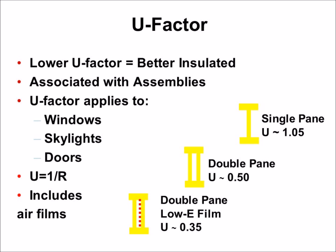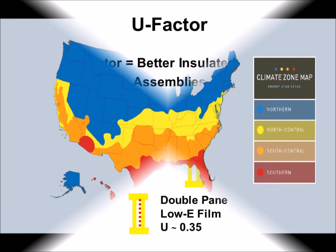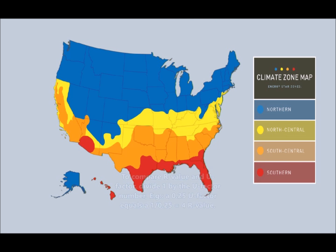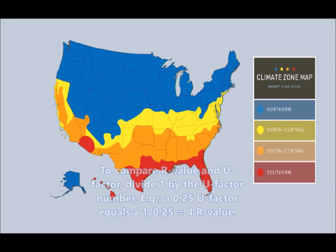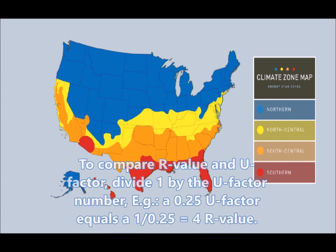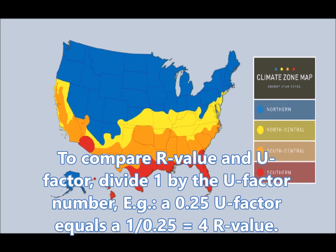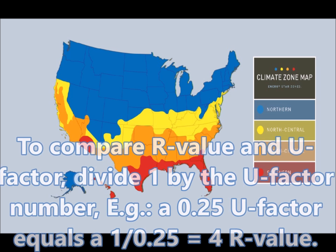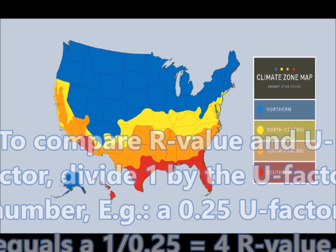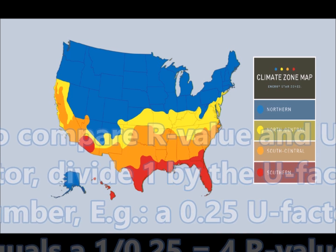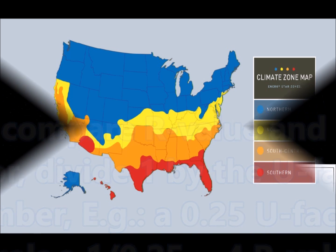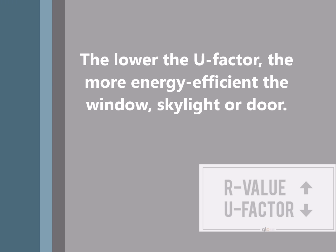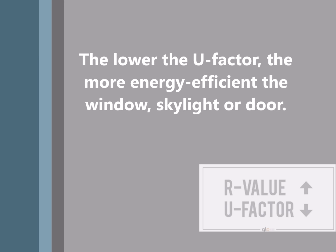To compare R-Value and U-Factor, divide 1 by the U-Factor number. For example, a 0.25 U-Factor equals 1 divided by 0.25, resulting in a 4 R-Value. The rate at which a window, door, or skylight conducts non-solar heat flow is what U-Factor is. So the lower the U-Factor, the more energy efficient the window, door, or skylight is.